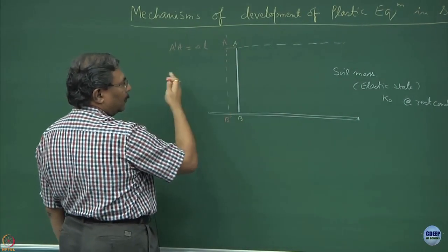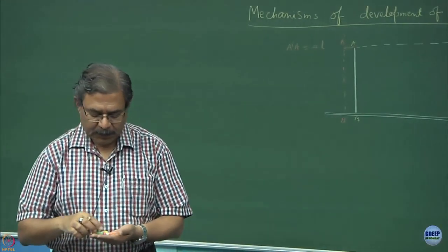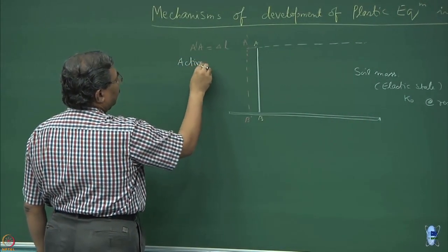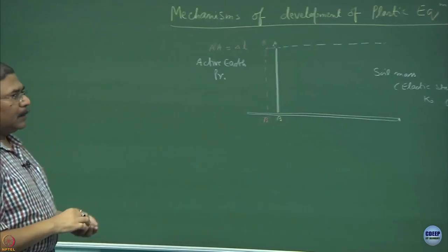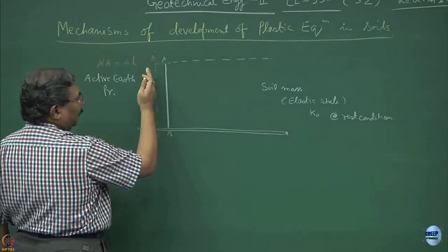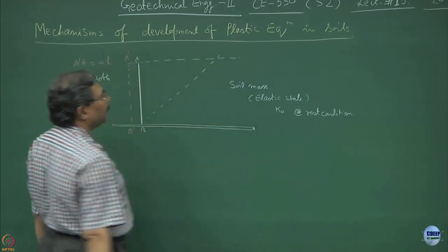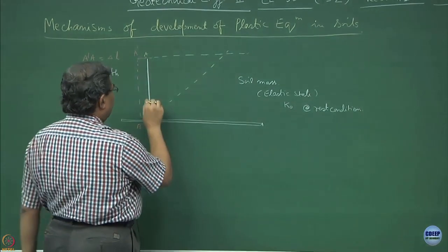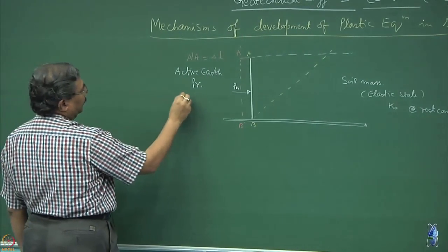What has happened here is the wall has moved out of the backfill. As we discussed in the previous lecture, this situation is termed as active earth pressure. Because the soil mass is also moving out, there will be a slip surface getting generated. This slip surface gets generated such that if this is Pa — the active earth pressure — this angle is going to be 45 plus phi by 2, as we have proven.